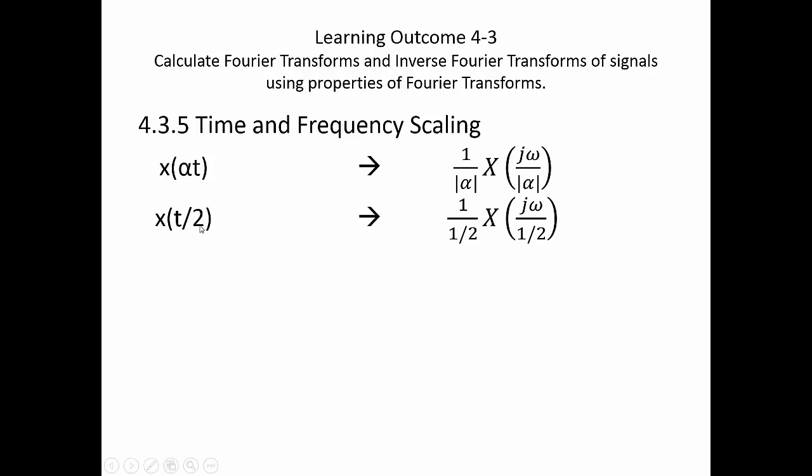So if alpha is 1 half, we just substitute into 1 half, substitute into 1 half, and that's going to turn this really into a 2, and turn this into a 2j omega. That's just algebra, nothing new.